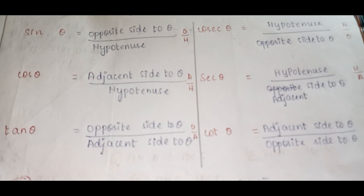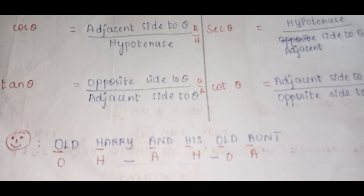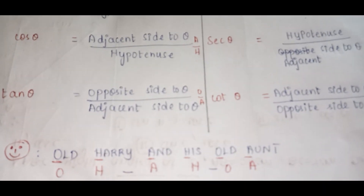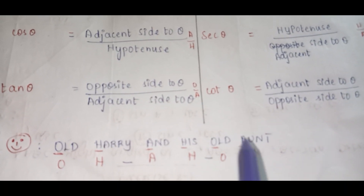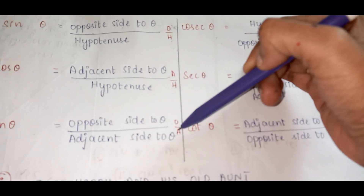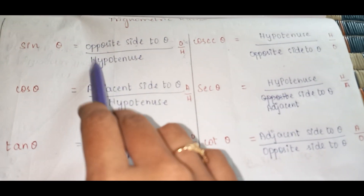Let me tell you a silly trick to remember the ratios. Remember this one line: 'Old Harry and His Old Aunt.' Take only the first letter of each word: Old = O, Harry = H, and = A, His = H, Old = O, Aunt = A. So you get O-H, A-H, O-A. That gives you the ratios for sin (O/H), cos (A/H), and tan (O/A).